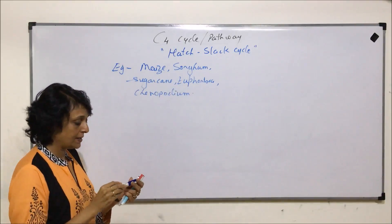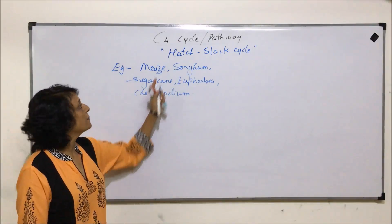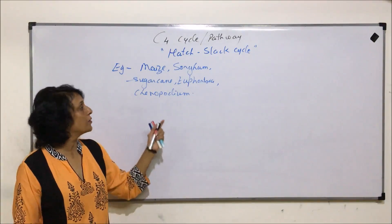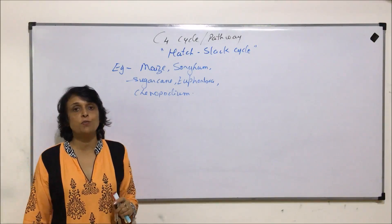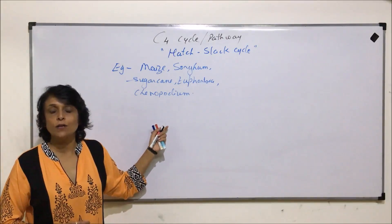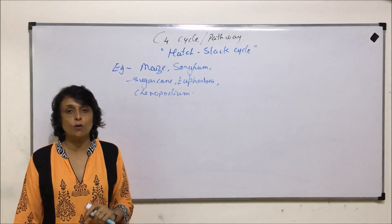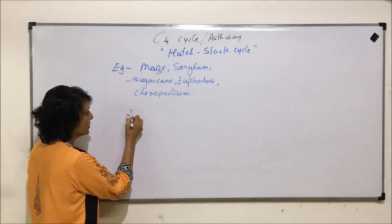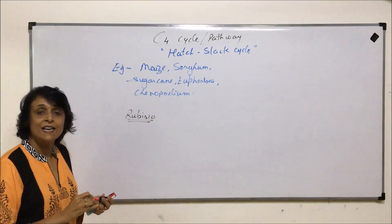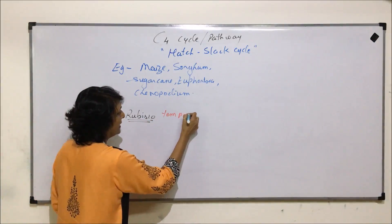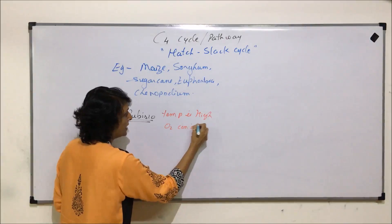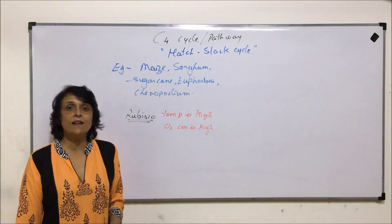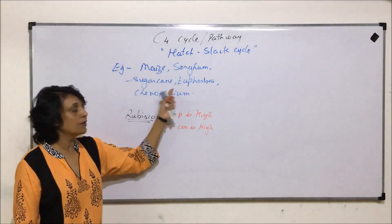The most interesting thing about C4 plants is how they have adapted themselves. The C4 cycle is a cycle that has evolved so that plants can avoid photorespiratory loss. In an earlier video we discussed photorespiration and saw that plants growing in warmer conditions suffer from this problem because of Rubisco. Rubisco's behavior changes when temperature is high and oxygen concentration is high, so unless plants show some adaptation they keep suffering from these problems.